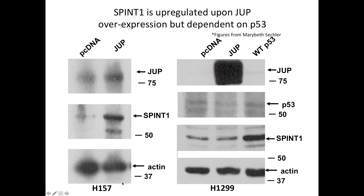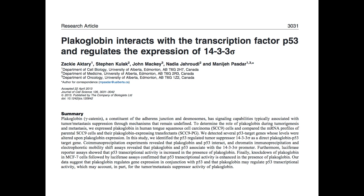What happens if we overexpress JUP? In cell line H157, they overexpress JUP and SPINT1 goes up — validating the network I created. This one is a little different: this cell line has a functional copy of P53, this one does not. When he overexpresses JUP in the P53-null line, basically nothing happens to SPINT1. But when he inserts wild-type P53 back in, we get a ton of SPINT1. P53 is a very well-known tumor suppressor. My SPINT1 is now acting with the rock stars of tumor suppressors.